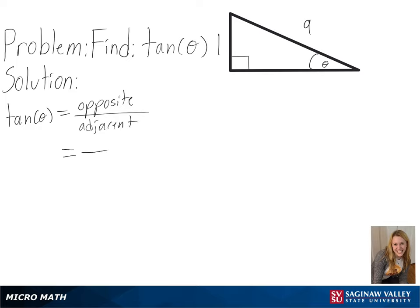We already know our opposite side is 1, but we can use the Pythagorean theorem, or a squared plus b squared equals c squared, to solve for our adjacent side.